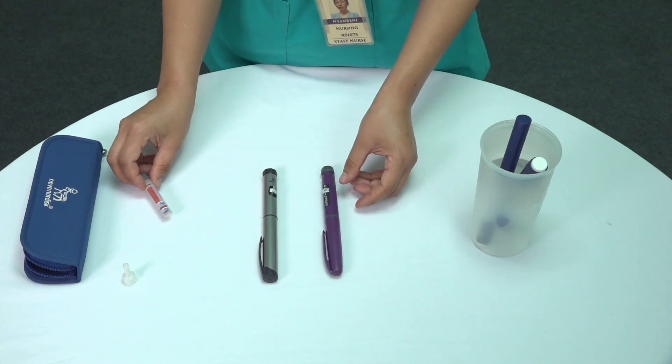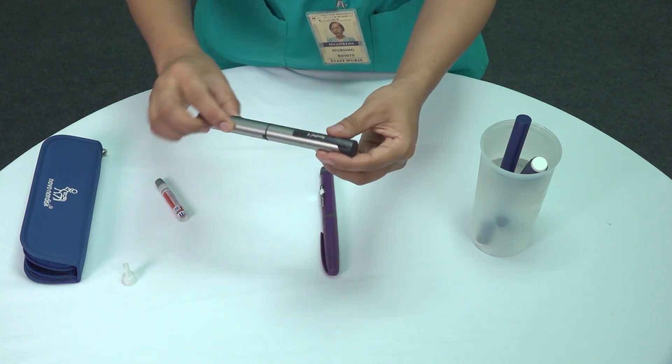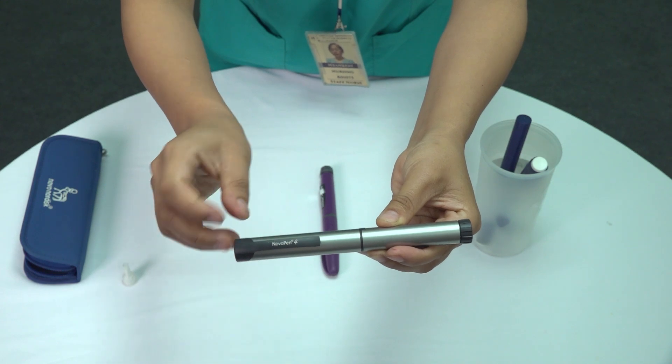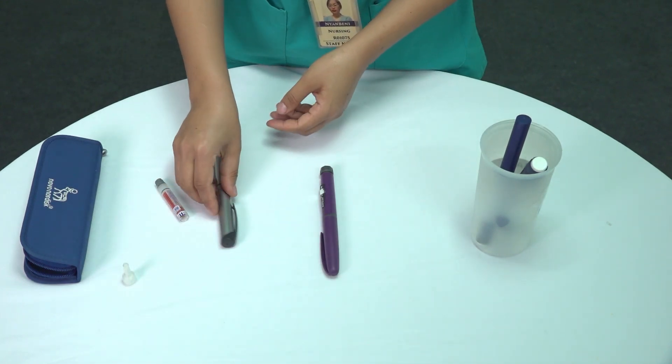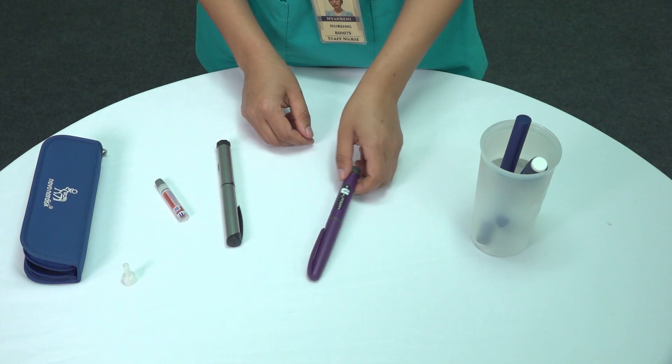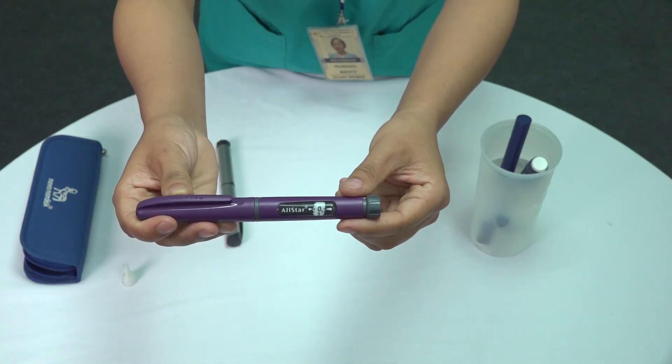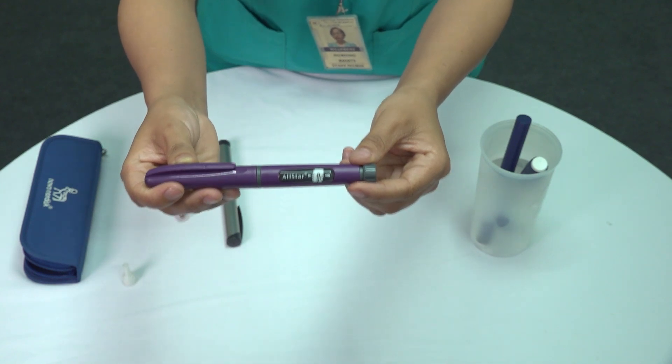For example, the NovoPen is a permanent pen that works with various insulin types, including human mixture insulin. Another example is the AllStar pen. This one is typically used with insulin glargine or levemir, a long-acting insulin—a great choice for patients requiring consistent long-term solutions.